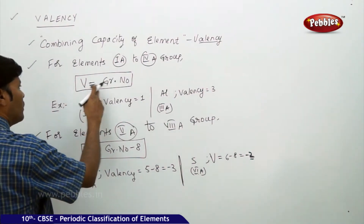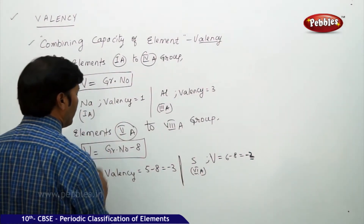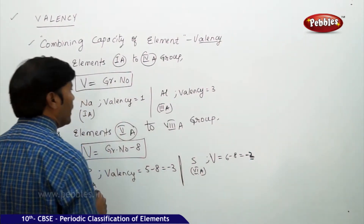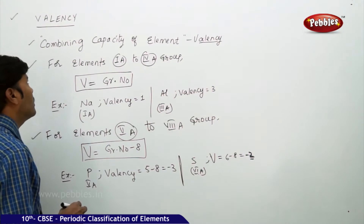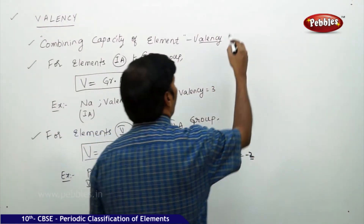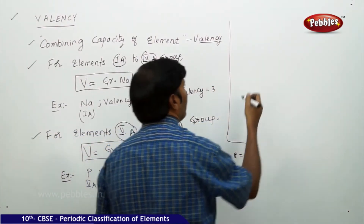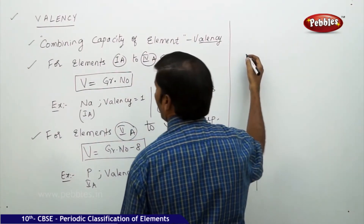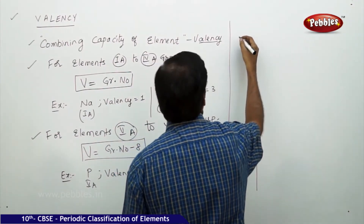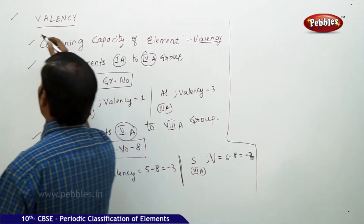So these are the two formulas you need to keep in mind: valency equals group number, and valency equals group number minus 8. This was the first case — valency.